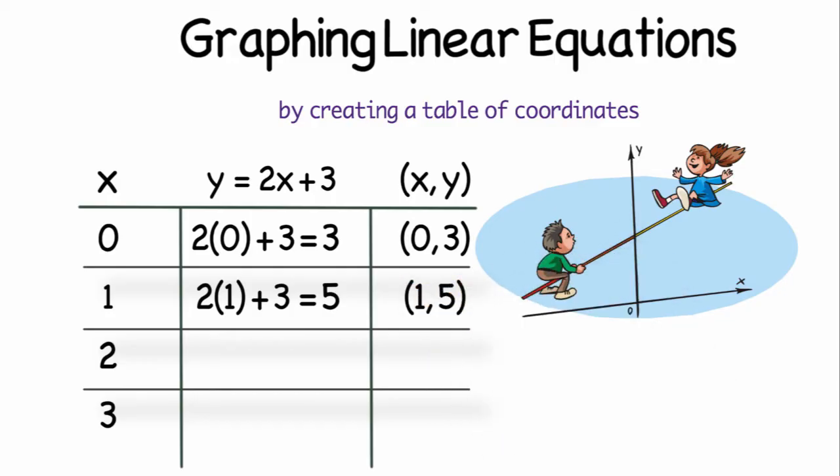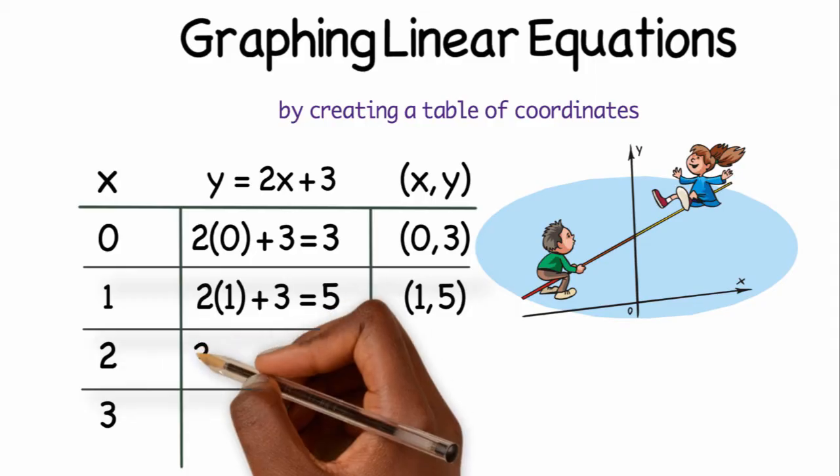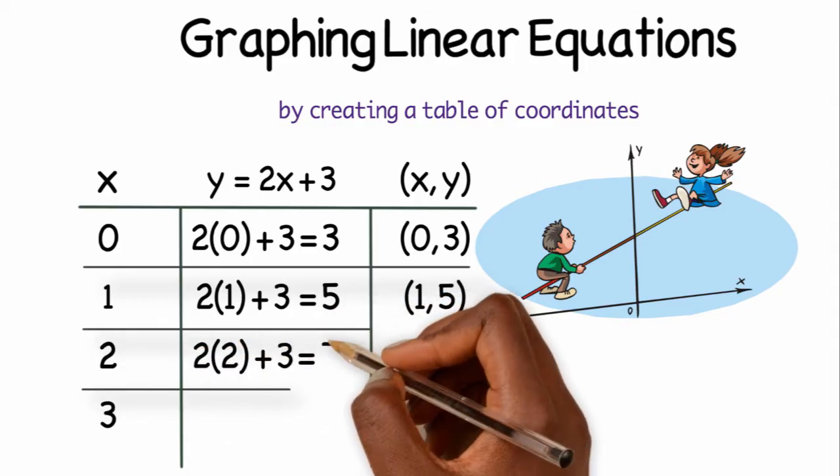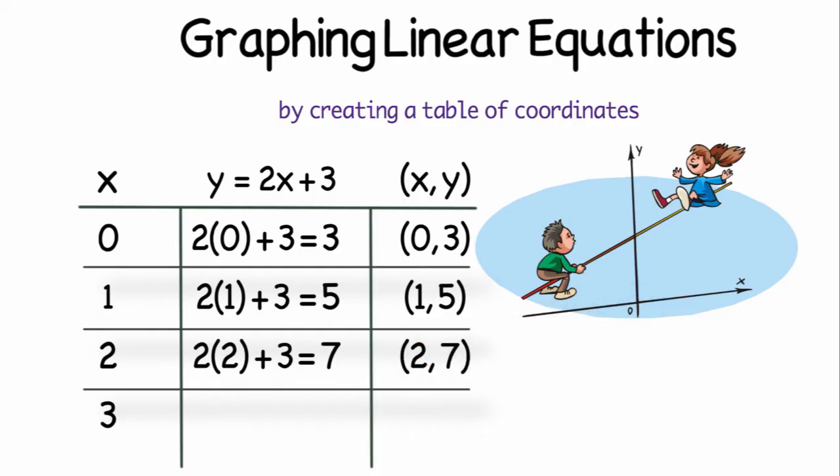This third x value I chose was 2. So now 2 times 2 is 4, and 4 plus 3 is 7. So (2, 7) will be the coordinate that I will be graphing next.